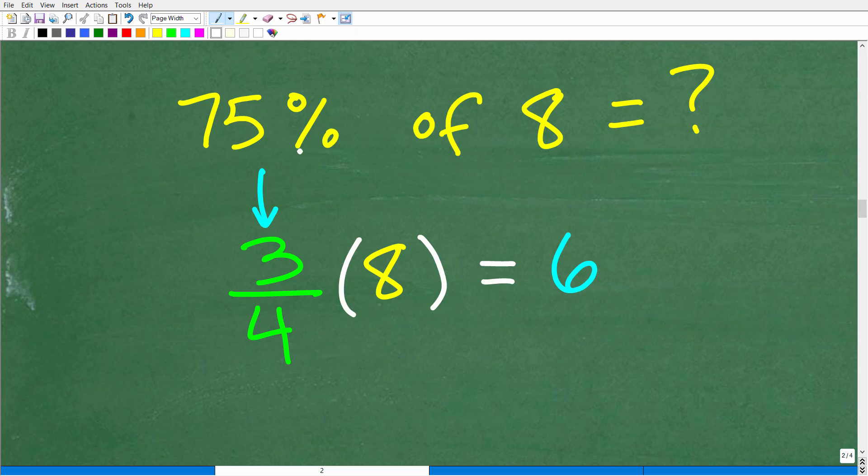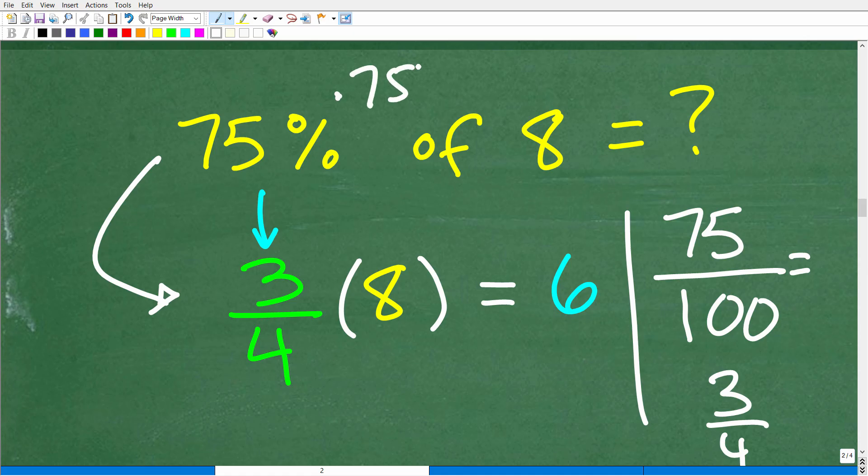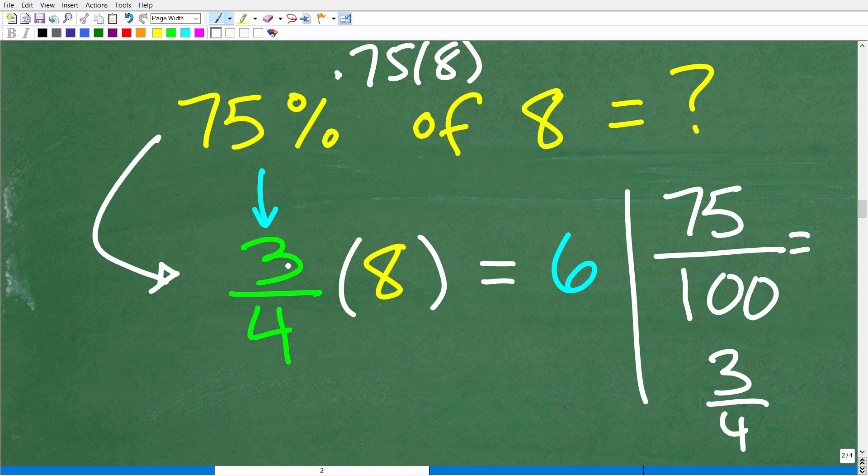So let's talk about another way you can figure out what 75% of 8 is equal to. This is a far easier way, in my opinion. 75% is the same thing as 3 fourths as a fraction. To convert a percent to a fraction, you simply put it over 100. So 75% as a fraction, put it over 100, then you can reduce 75 over 100 to the fraction 3 fourths. I'm going to multiply by this number, which is 8.